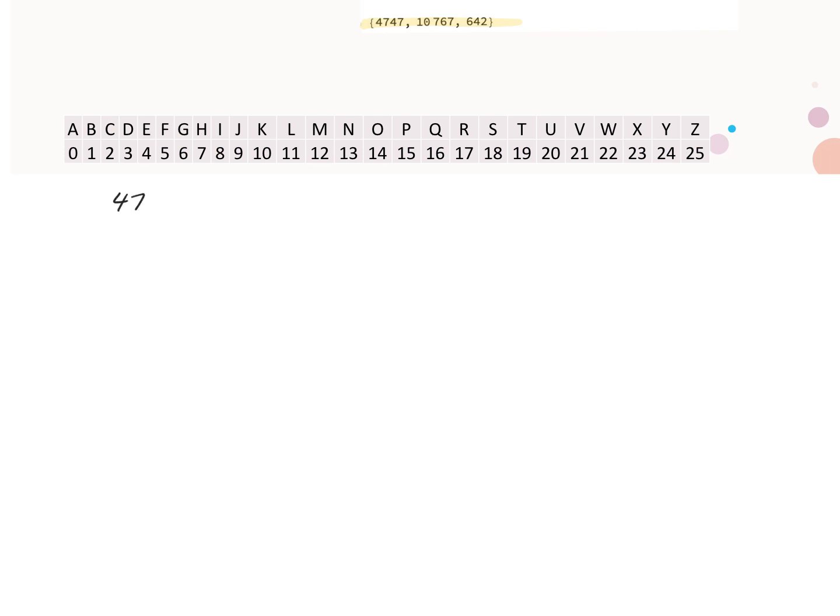So 4,747, we're going to divide that by 26 squared, and 26 squared goes in seven times. And then we'll calculate the remainder, divide that by 26, and the remainder is 15. So it's zero times 26 plus 15.